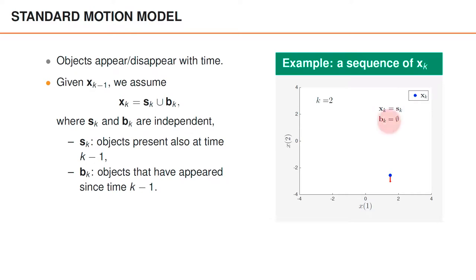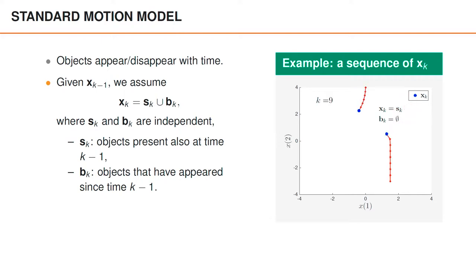At most times, the set of new objects that have appeared is empty, which means that xk and sk are identical. For instance, at time 2, there is only one object present, and that object was also present at time 1. Both sk and xk therefore contain the state vector of that object. One exception is at time 3, where a new object appears. The set bk therefore contains that state vector, whereas sk contains the state vector of the other object, and xk contains both state vectors. No new objects appear from time 4 to time 9, and at all these times, sk and xk contain the same two vectors.